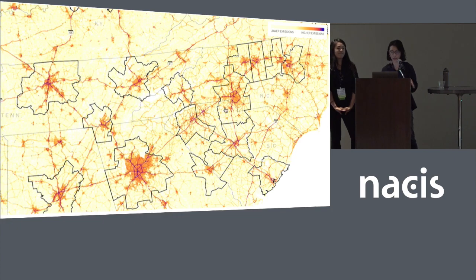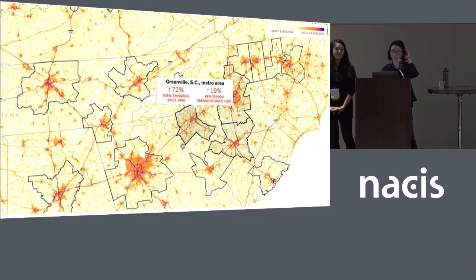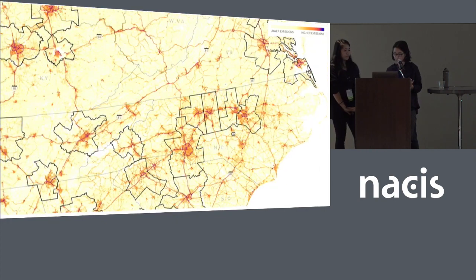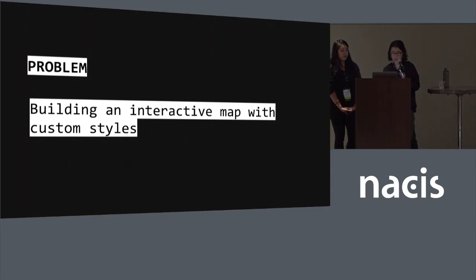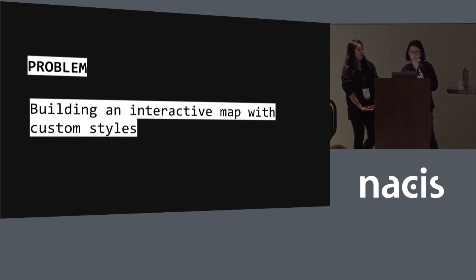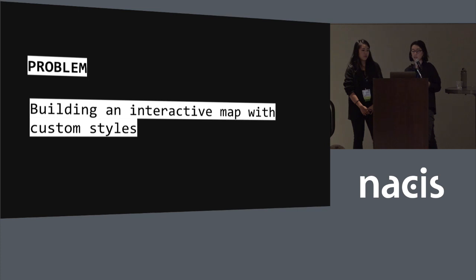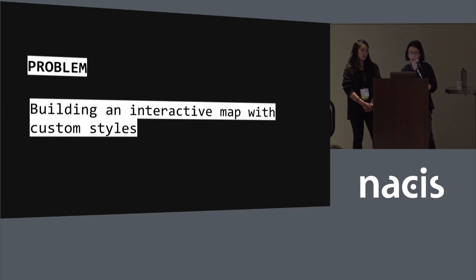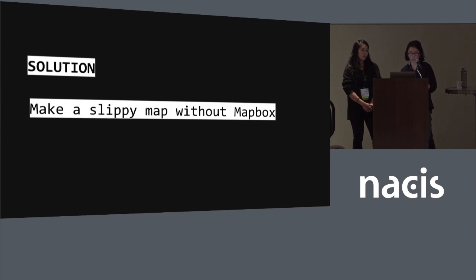Here are some more examples of how we use similar techniques of automation and layering for other stories. This is a project we did on car emissions in the U.S. — essentially a giant raster map with really fine detail, and we wanted readers to be able to pan around and explore their area. We wanted to keep the original projection, which is not Mercator, and we had some custom styles like highway shields. So we basically wanted to fake a slippy map without actually using Mapbox.